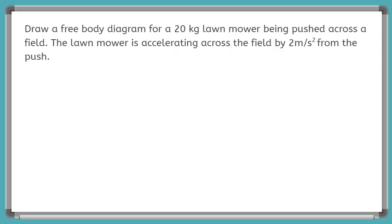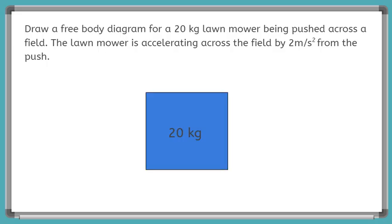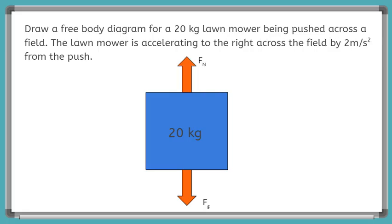So the first thing we can do is draw our object. And we'll just use the box to represent the lawn mower, so it'll be like this. And now let's think about our forces. We know the lawn mower has mass, so we can assume gravity is acting on it. So we can draw our gravity arrow like this. And the question says the mower is accelerating across the field, but not through the ground. So we can draw the normal force arrow acting up and balancing with the gravity arrow. So it'll be like this.